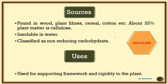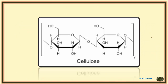Cellulose is found in wood and plant fibers. It is insoluble in water and a non-reducing carbohydrate. Its major use is providing structural support and rigidity to plants. Cellulose is quite rigid compared to starch because it is only linear, which allows very close packing. In contrast, starch has both linear and cross-linked structure and needs to be blended with fibers for mechanical strength.